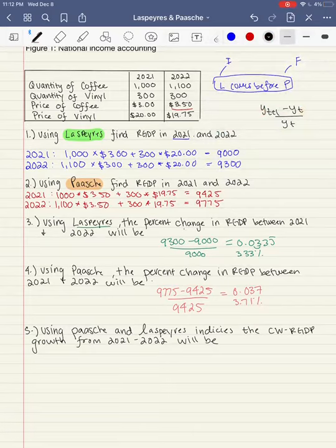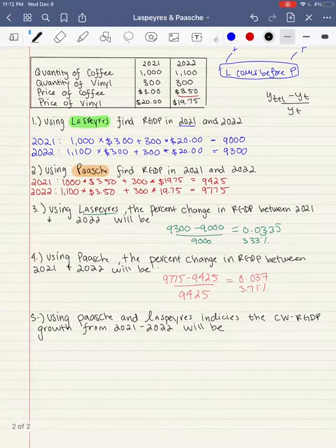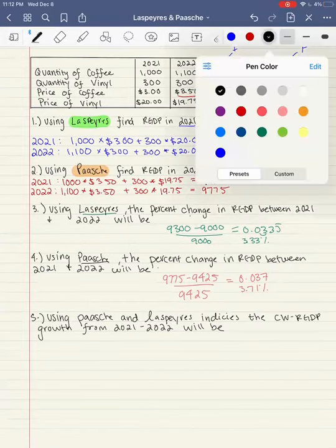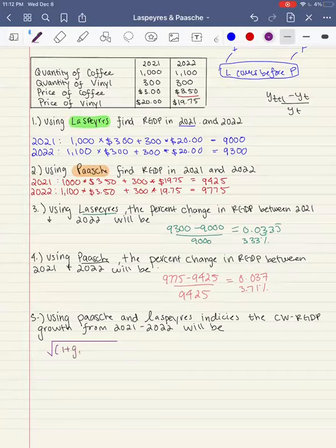So now that we have the growth rates of both Laspeyres and Paasche, we can finally calculate the chain-weighted real GDP. So recall that chain-weighted real GDP is the square root of 1 plus the growth rate 1 times 1 plus the growth rate of 2, okay, minus 1.